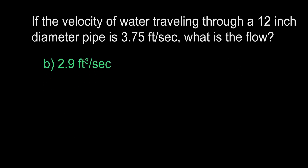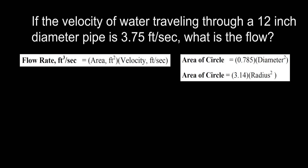The answer is B, 2.9 cubic feet per second. To solve this problem, we will need to use the formulas for flow rate and area of a circle. These are given to you on the exam. For the area of a circle, you can use either version of the formula — it does not matter which one you use, just stick with it.